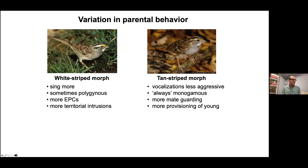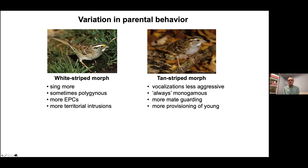My collaborator Donna Maney was interested in this color polymorphism because they observed a correlation between color polymorphism and parental behavior. The white stripe morph would sing more, was more aggressive, sometimes polygamous with more extra-pair copulations and territorial intrusions. Tan stripers on the other hand are more maternalistic, less aggressive in vocalization, more mate guarding and provisioning of the young. They represent opposite ends of the spectrum in terms of reproductive or parental behavior.